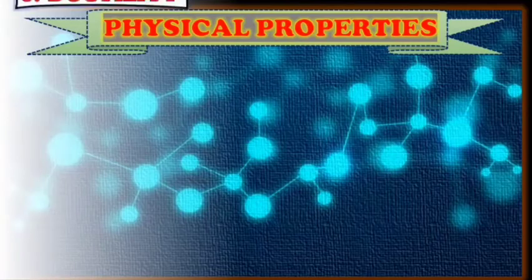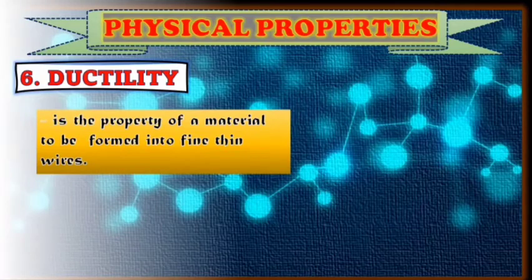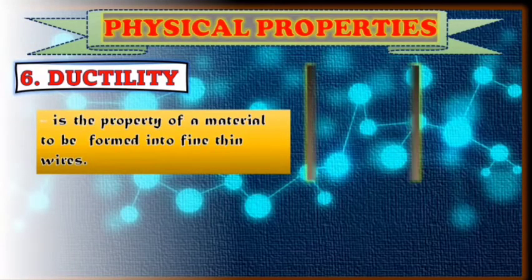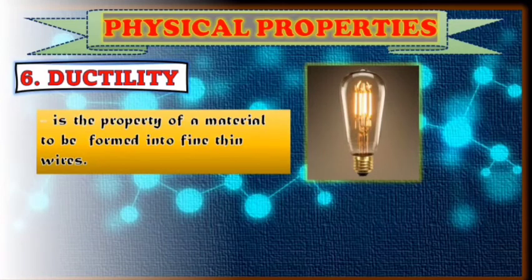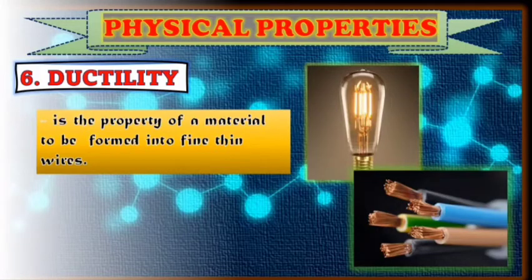Next property of material is what you call ductility. This is the property of a material to be formed into fine thin wires. Just like iron, brass, and tungsten are what you call ductile materials. They are used in electrical wiring at home and in the filament of bulbs. The wires of our chargers, headphones, and other electrical cords of appliances are products of what you call ductile materials.